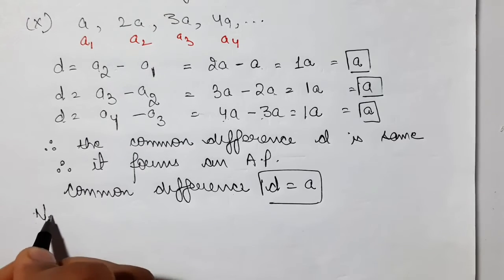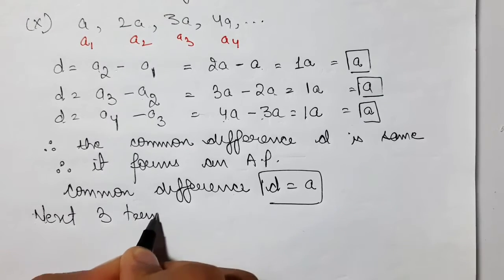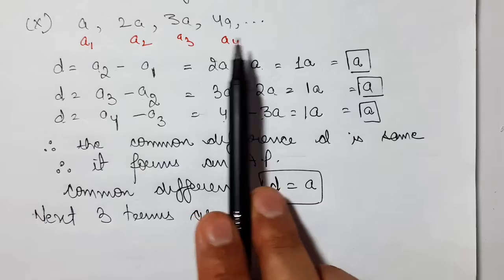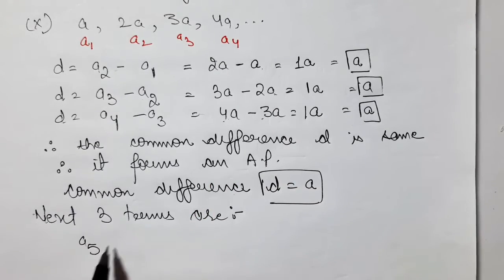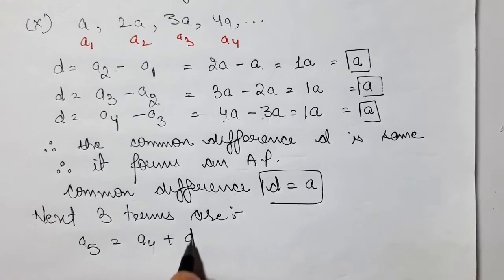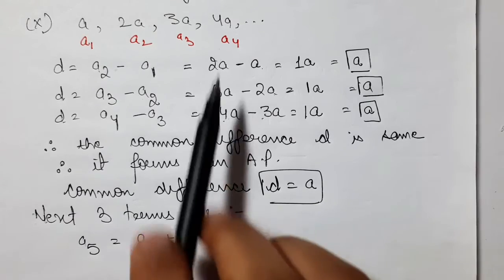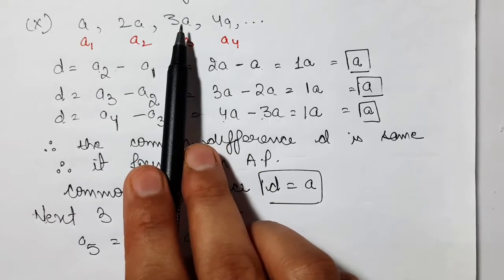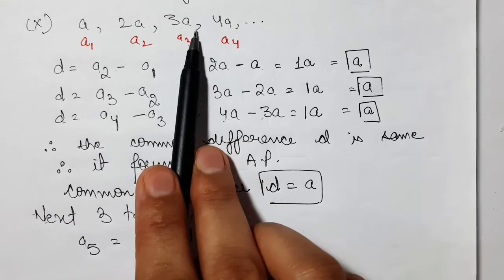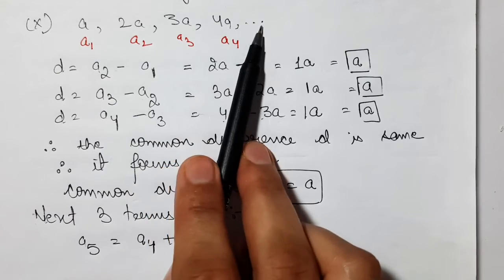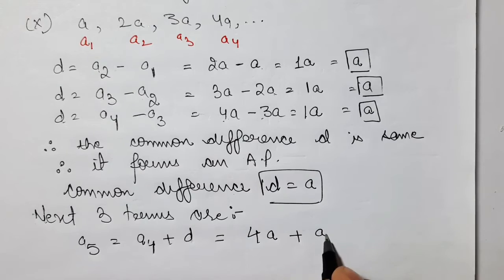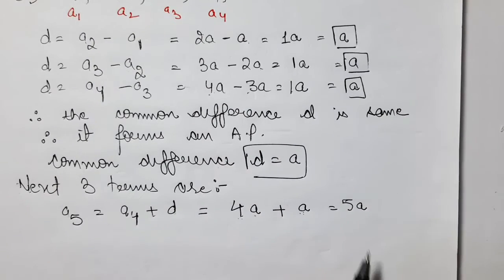Now we write three more terms. The fourth term is already given in the question. For the fifth term, we add the common difference D to the fourth term: 4A plus D equals 4A plus A equals 5A.